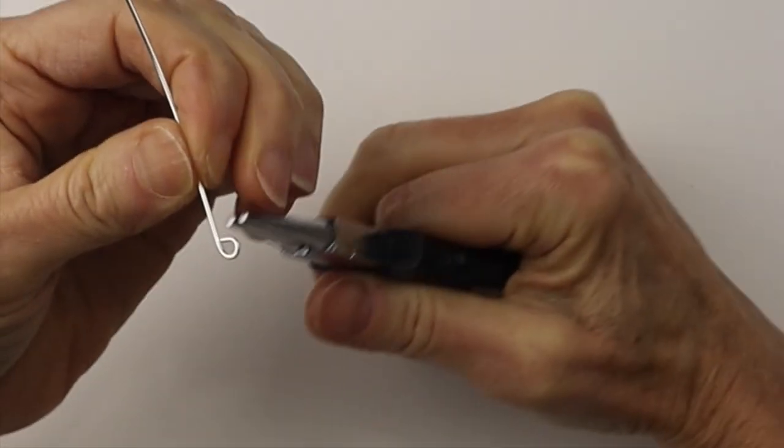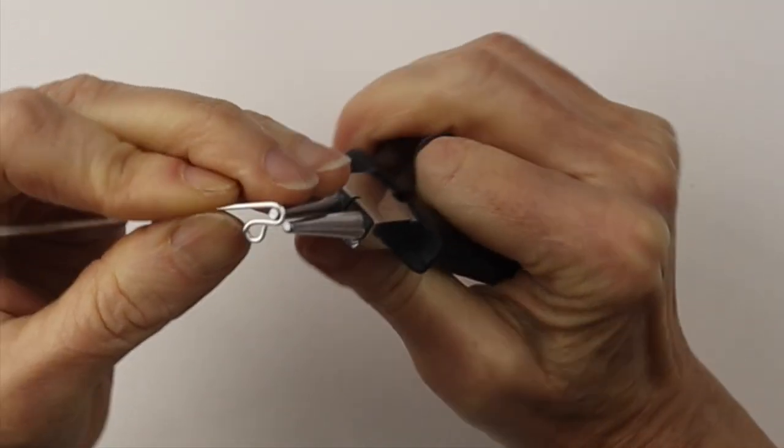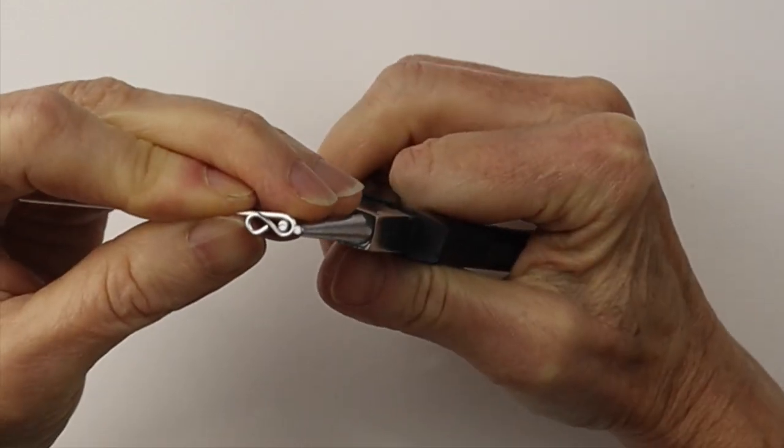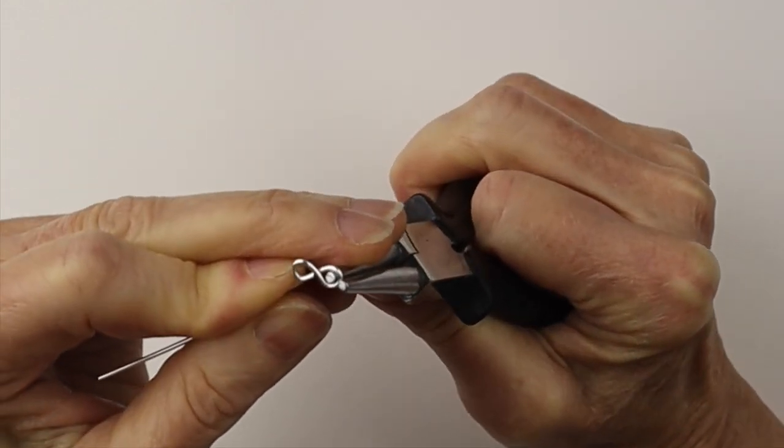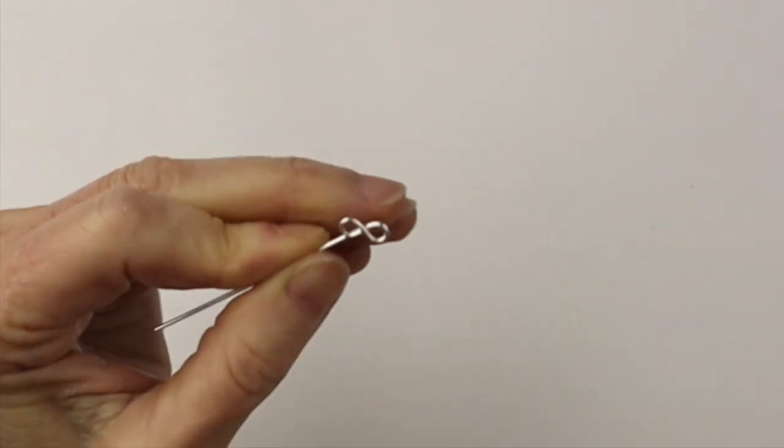And then on the other side we're going to make sure it's in the same position and wind the wire around to make that infinity sign. You'll see it's even on both sides with that straight line.